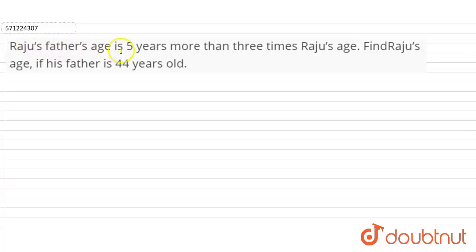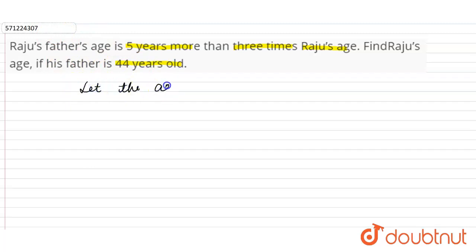Hi students, our question is: Raju's father's age is five years more than three times Raju's age. Find Raju's age if his father is 44 years old. Now, let the age of Raju be x.